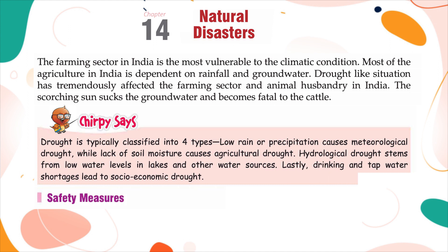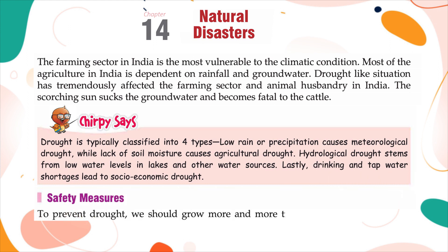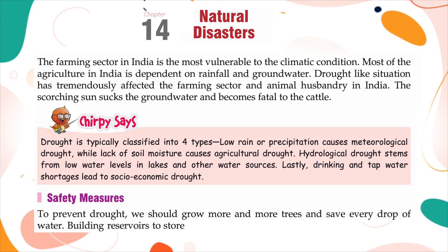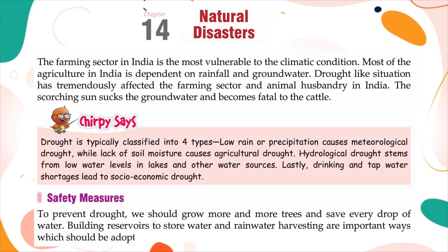Safety measures for drought: To prevent drought, we should grow more trees and save every drop of water. Building reservoirs to store water and rainwater harvesting are important measures that should be adopted to tackle drought.